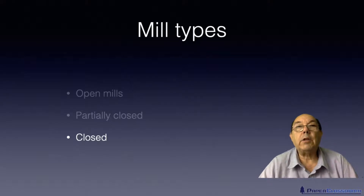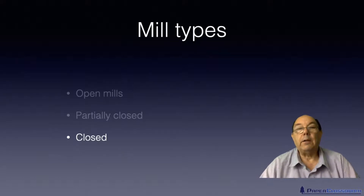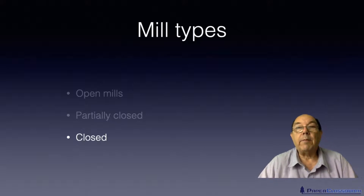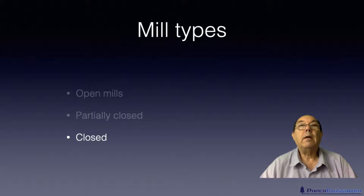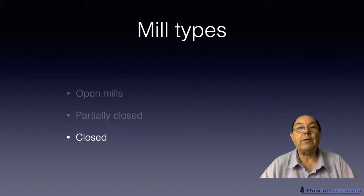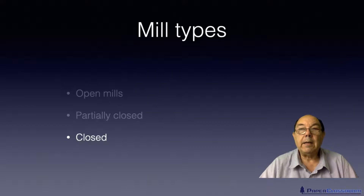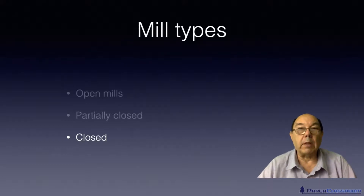Everything that's brought into the mill is cleaned up and recycled and used again. Now occasionally the mill will lose some water — it loses it through evaporation out into the atmosphere, some of it will go out with the product, and there may be some spillages. So they're always having to bring in some new water, but they have no liquid effluent discharge at all. And that's the ideal for every paper mill.